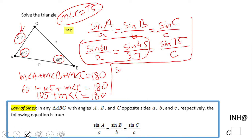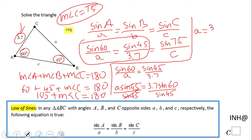Sine of 60 over a equals sine of 45 over 3.7. Cross multiplication and we have a times sine of 45 equals 3.7 times sine of 60. And obviously if you want to find a, divide by sine of 45, and we get a equals 3.7 times sine of 60 over sine of 45. So in this case you just need a calculator.